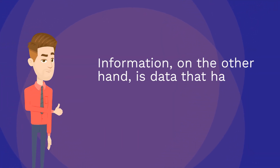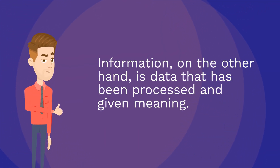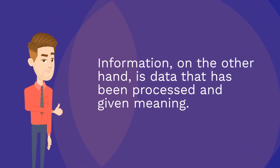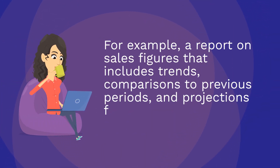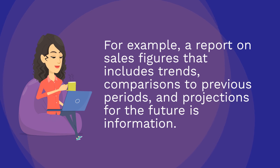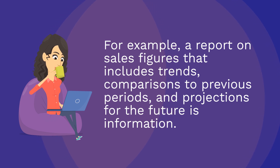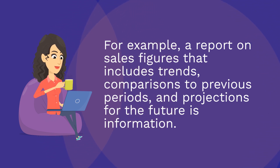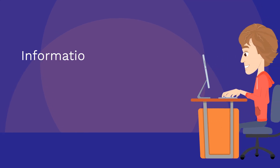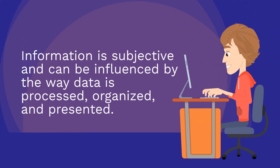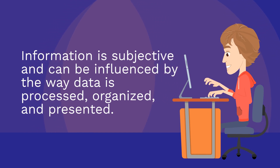Information, on the other hand, is data that has been processed and given meaning. For example, a report on sales figures that includes trends, comparisons to previous periods, and projections for the future is information. Information is subjective and can be influenced by the way data is processed, organized, and presented.